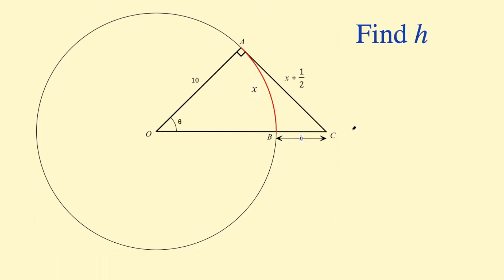In this problem we're given a circle and a right triangle. The radius of the circle is given as 10. This arc length AB in red is given as X, and the side AC of the right triangle is given as X plus a half. We're looking for this length BC labeled h, the length from the edge of the circle to point C, which is the corner of the right triangle.